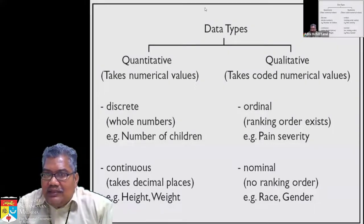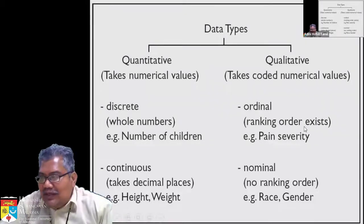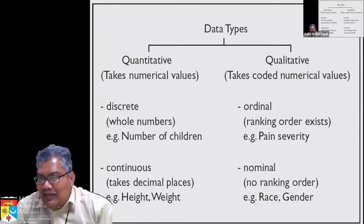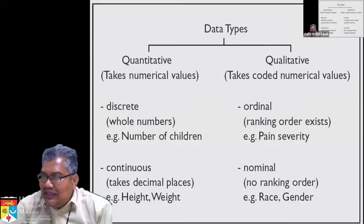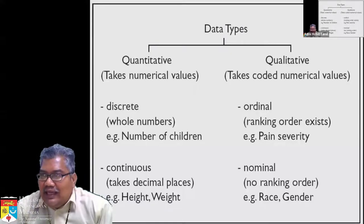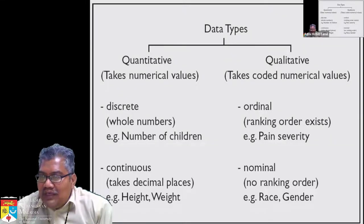Ordinal data is based on ranking. Orthopedic surgeons are guilty of this — when they measure pain they use the visual pain score, a scale from 1 to 10 where 10 is most painful and 1 is least painful. That is actually ordinal data because the numbers 1 through 10 have no clear objective measurement — it is all based on subjective perception.